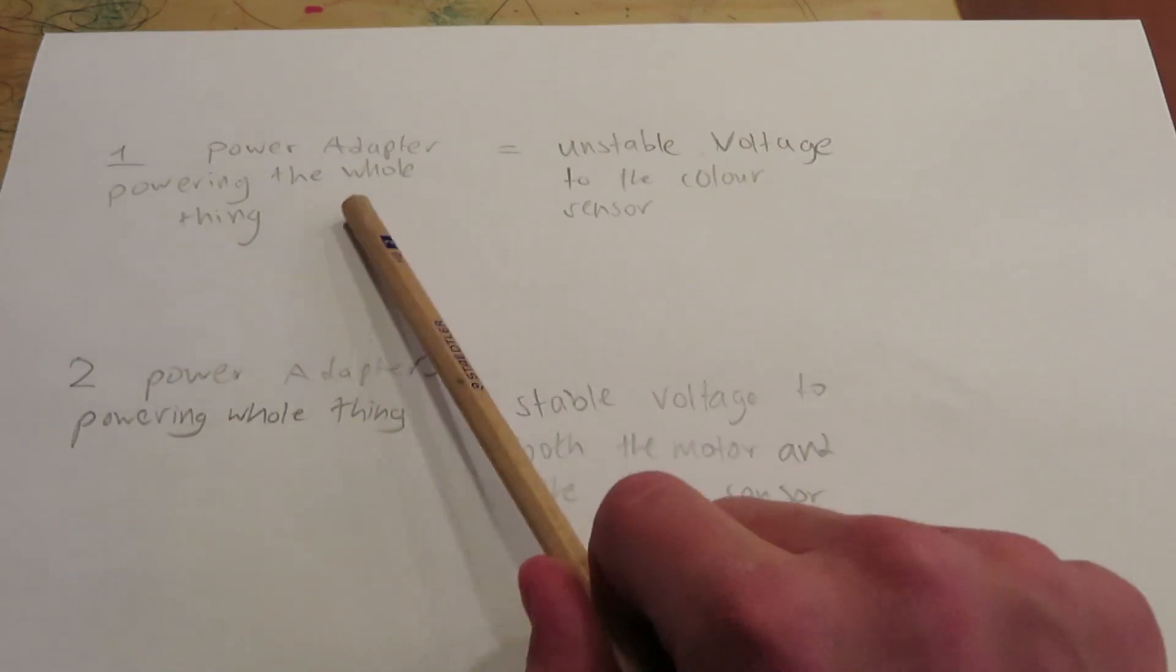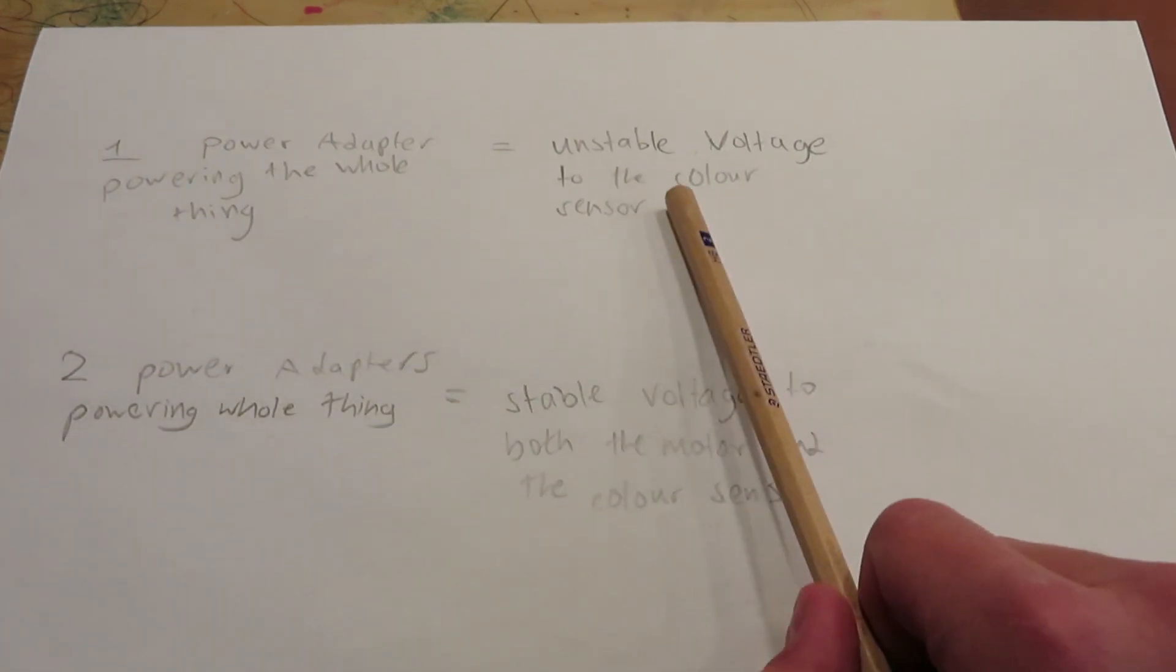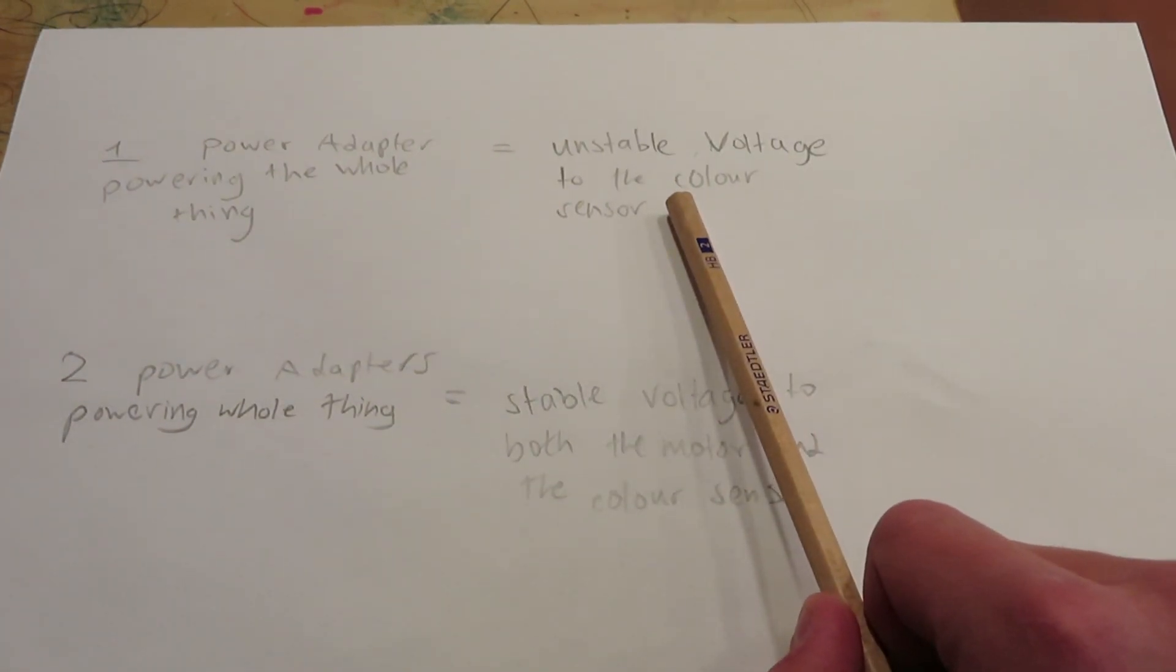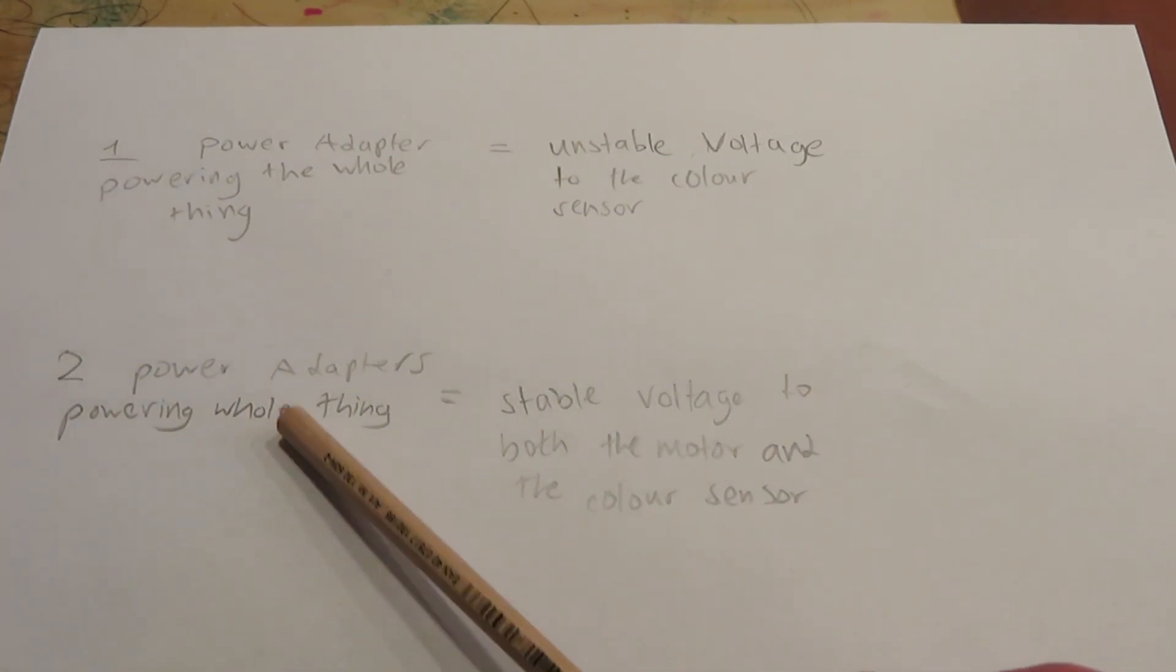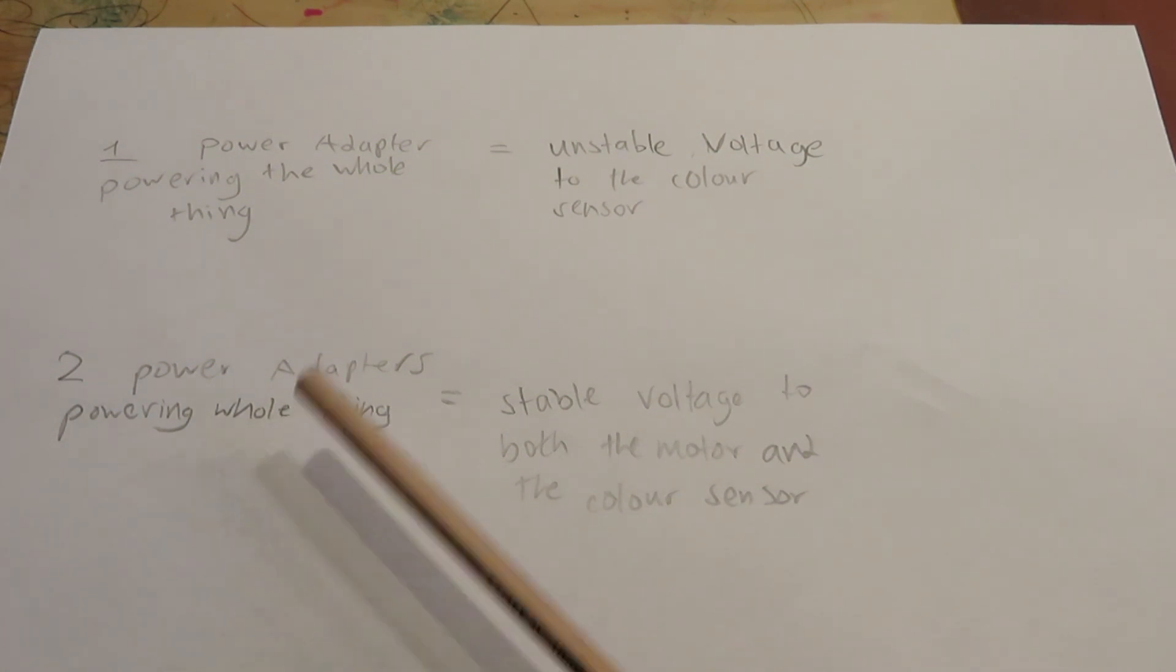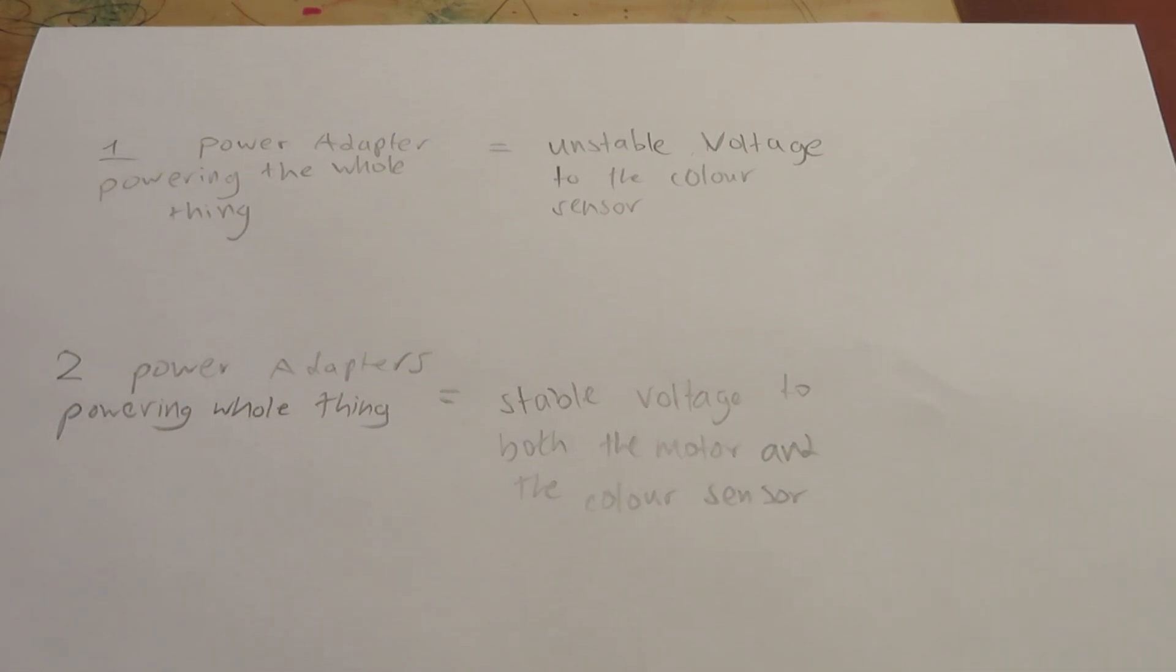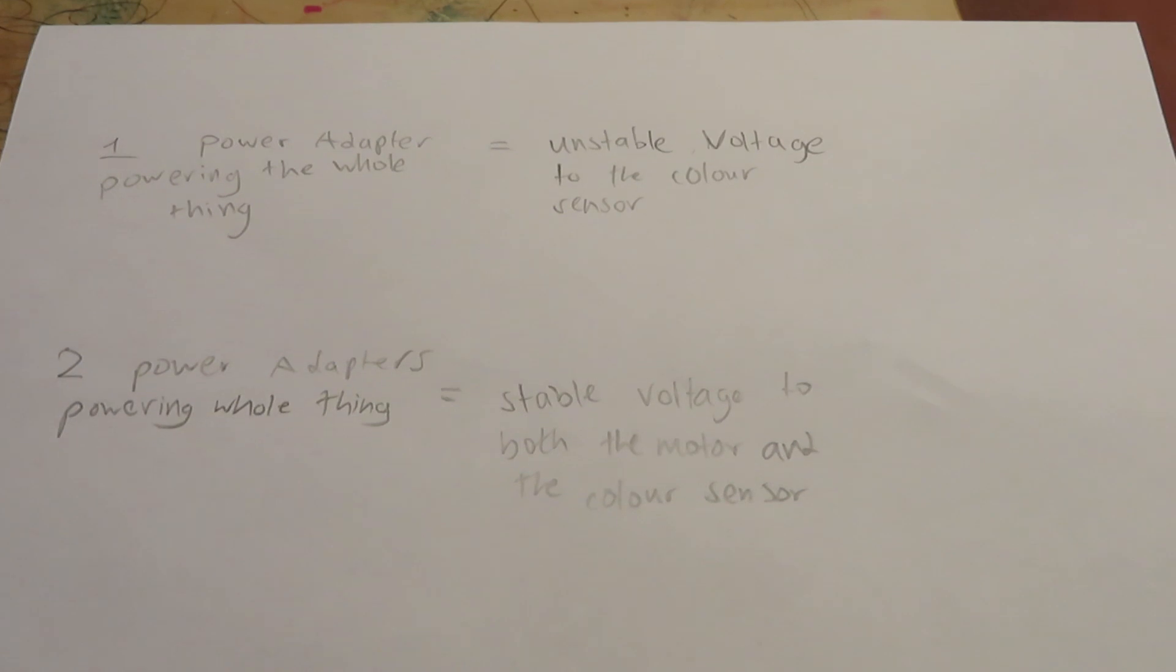If only one power adapter was powering the whole thing, this will lead to unstable voltage to the color sensor, since the motors take up a lot of voltage. But since I have two power adapters powering the motors separately and the color sensor separately, stable voltage goes to both the motor and the color sensor because they can't interfere with each other. This guarantees that the color values will be very accurate.